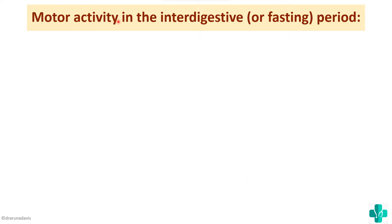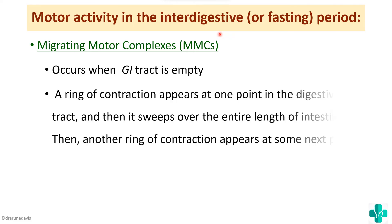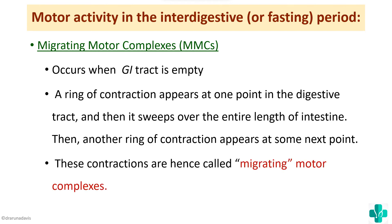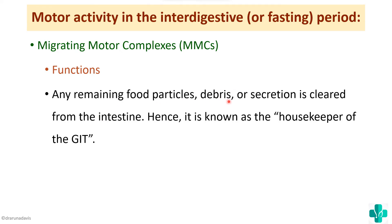In the fasting period, there is a special type of motor activity called migrating motor complexes, or MMCs. When the GI tract is empty — once all food is digested and absorbed — a ring of contraction appears at one point in the digestive tract and sweeps over the entire length of the intestine. Then another ring of contraction appears at a different point; they are called 'migrating' because each contraction occurs at different points. Their function is to clear remaining food particles, debris, or secretions from the intestine, which is why MMCs are called the housekeeper of the GI tract.